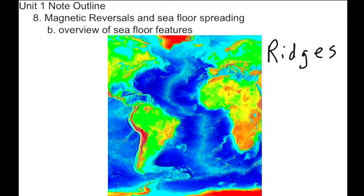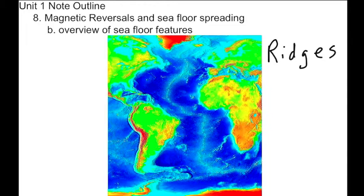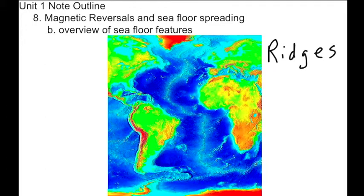The first feature I'll go over are the mid-ocean ridges. Here is the mid-ocean ridge. The mid-ocean ridges rise up high above the deep seafloor as a long chain of mountains.